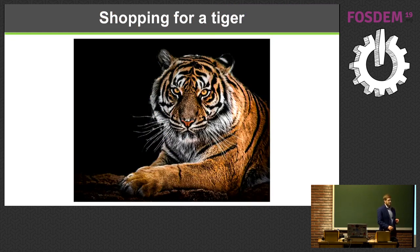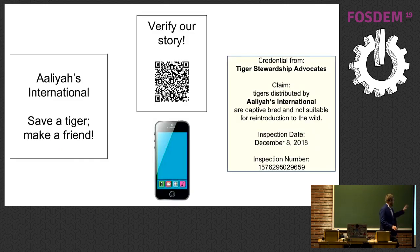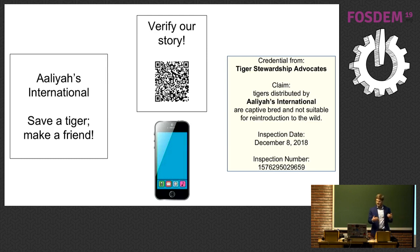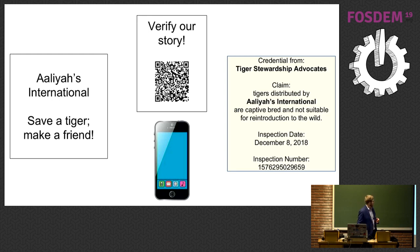Let me make this specific. I want to buy a tiger — my kids want a tiger. I order one off the internet. Alleyes International sells rescued tigers. But how do I know that's true? There's a QR code. I take out my phone, scan it, and it says Tiger Stewardship Advocates has issued a claim that they've inspected Alleyes International and these are captive-bred animals that can't be released. Great — I'm not going to be damaging the global tiger population by taking care of this tiger.